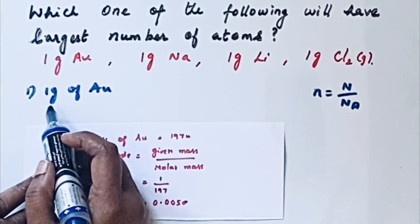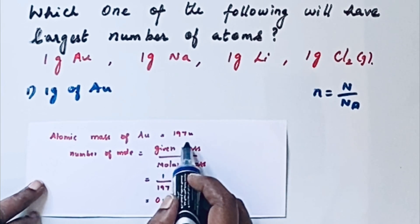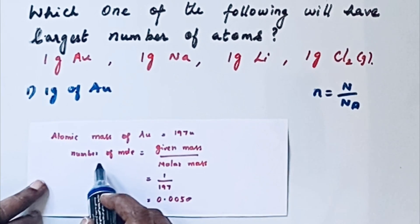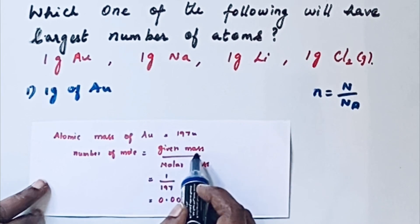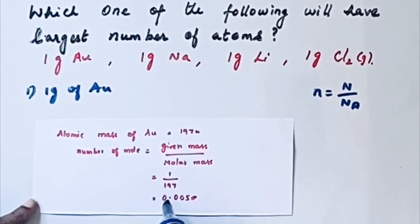Let us see first for 1 gram of Au, gold. Atomic mass of gold is 197 u. According to the first formula, number of moles equals given mass by molar mass. So given mass is 1 gram by 197, which equals 0.0050.